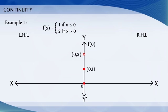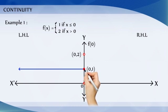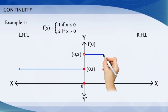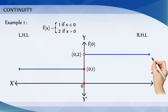Without lifting the pen from the plane of the paper, we cannot draw the graph of this function. That is, we need to lift the pen when we come to 0 from the left. We can say the given function is not continuous at x is equal to 0.